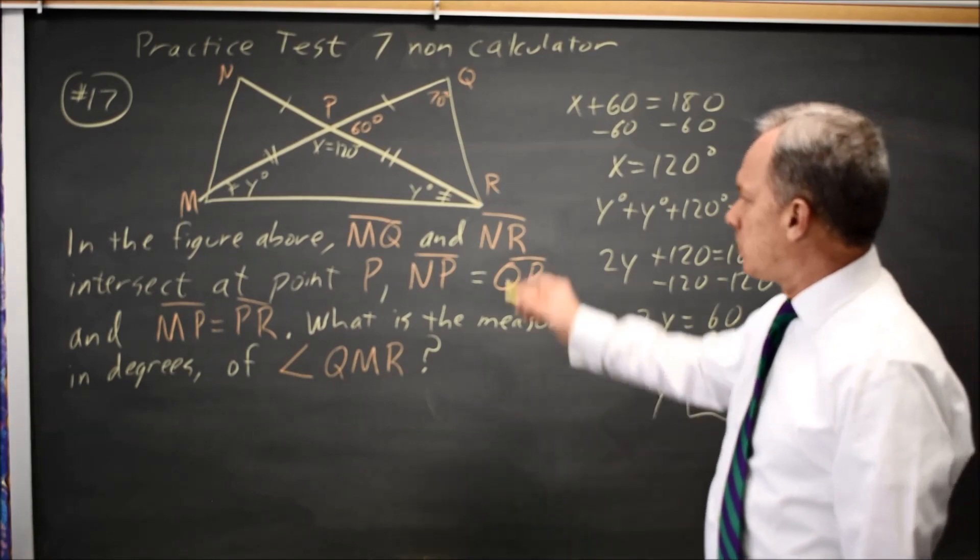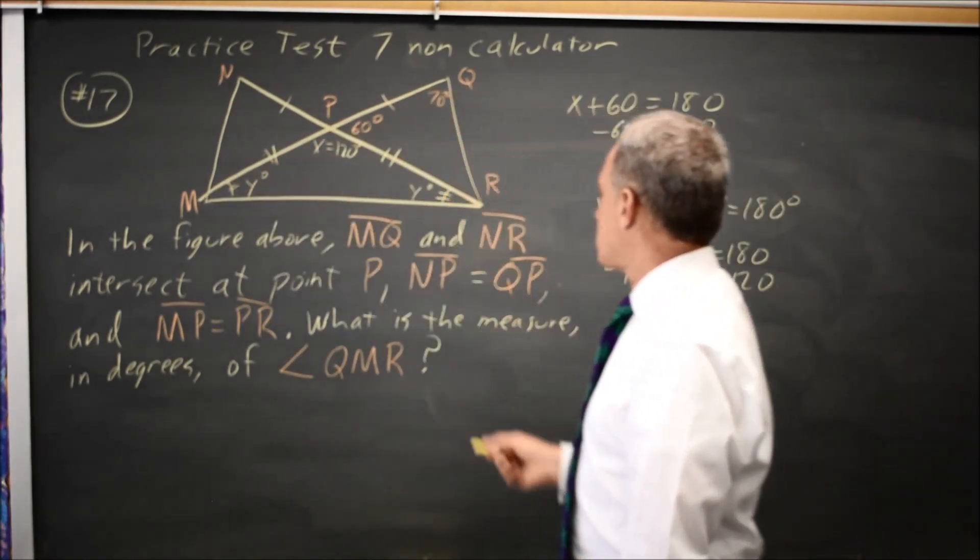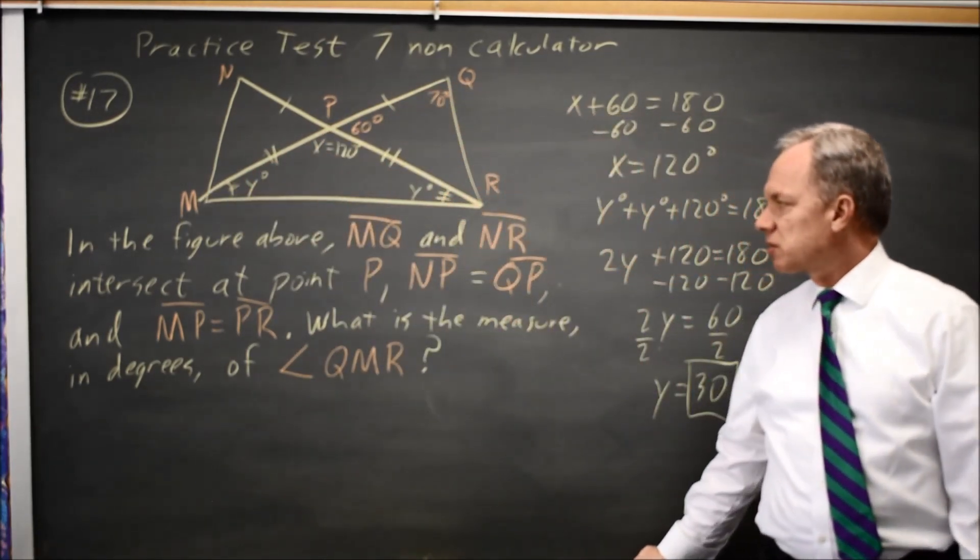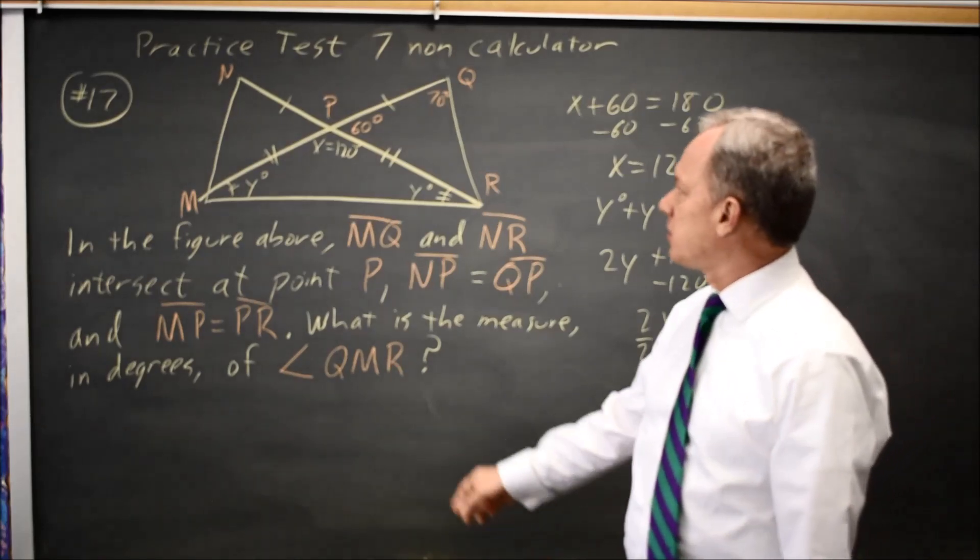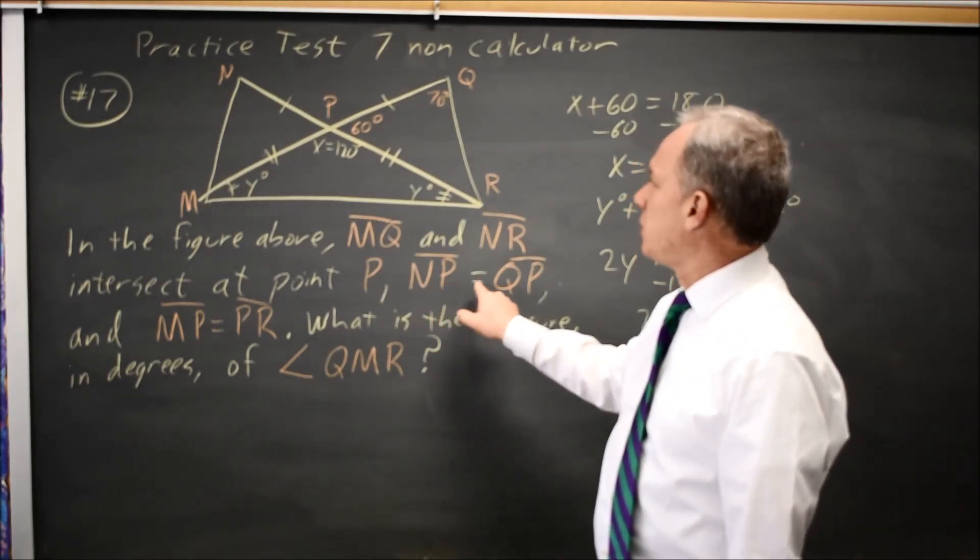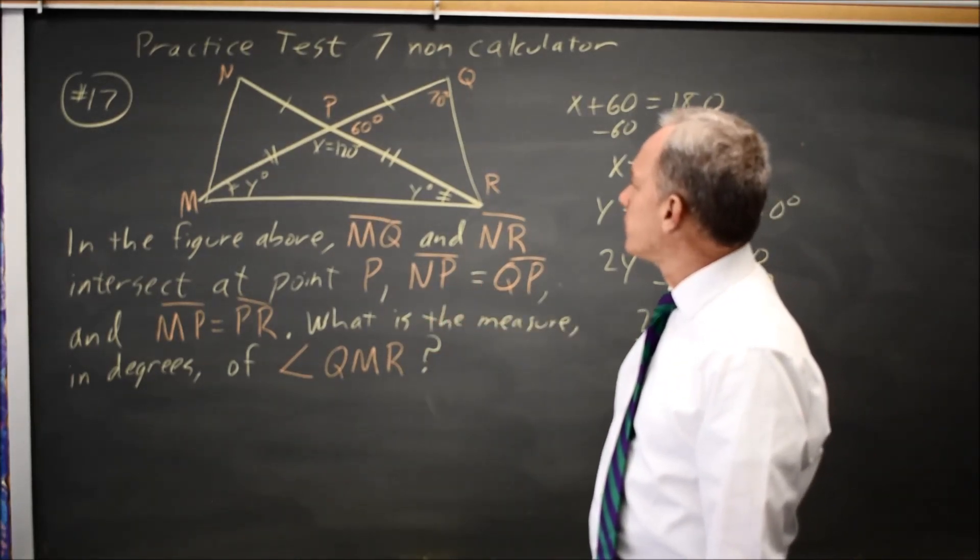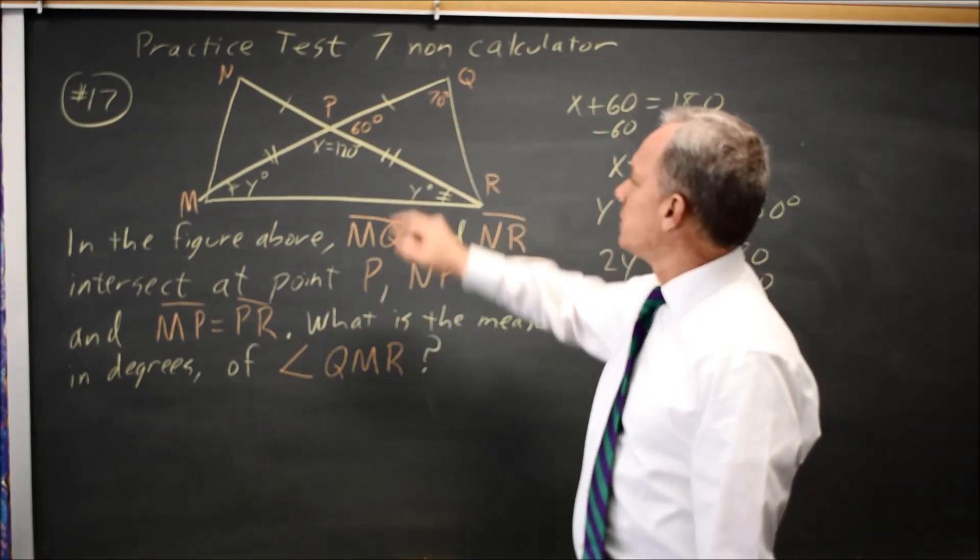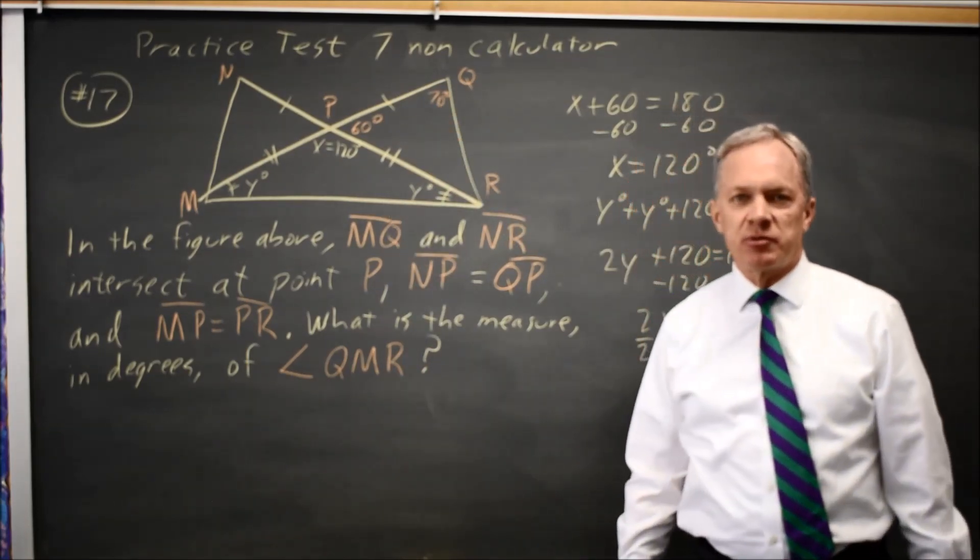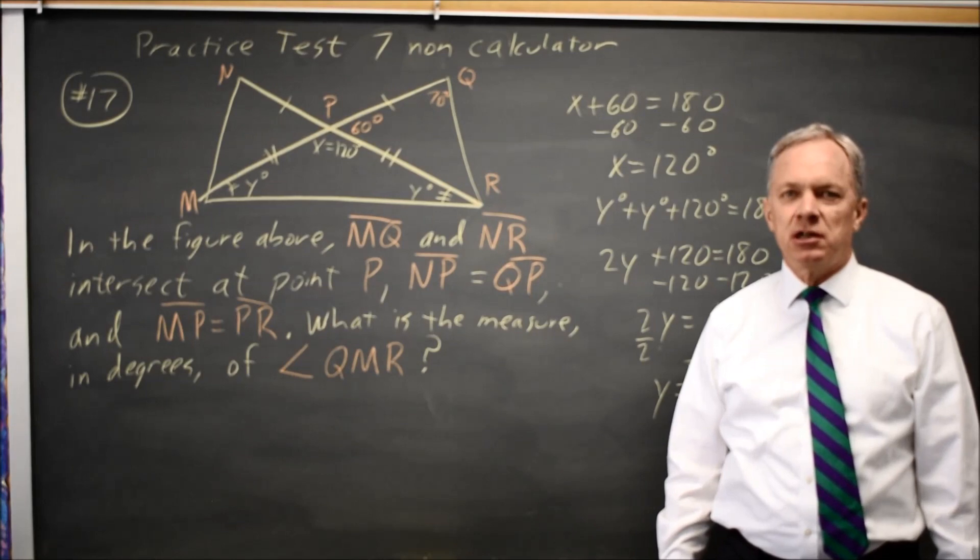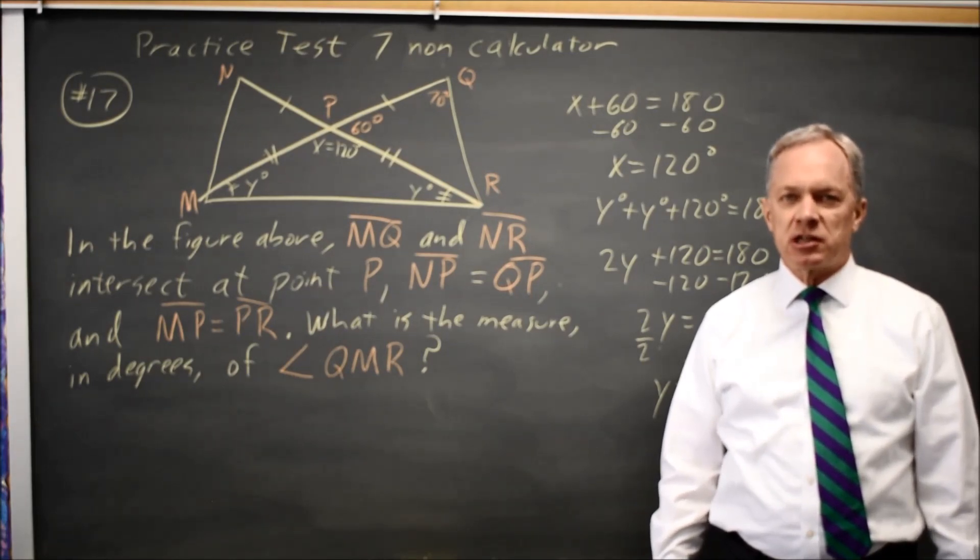And they're asking for angle QMR, and that's Y. So I have found the answer to their question. It turned out I never used that NP equals QP, and I never used that this angle is 70 degrees. They gave us extra information as a distractor. College Board does that on some of their questions.